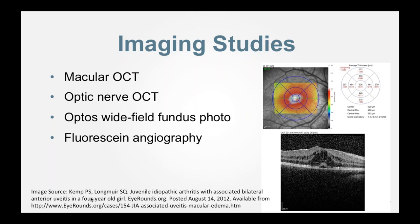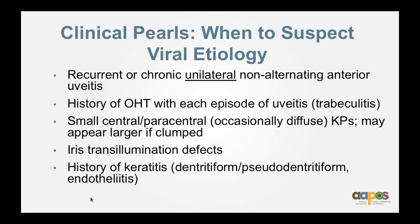Imaging studies include macular OCT, optic nerve OCT, wide-field imaging, and FA. Clinical pearls on when to suspect a viral etiology: if a patient presents with recurrent or chronic unilateral non-alternating uveitis, history of ocular hypertension with each episode of uveitis due to trabeculitis, small central or paracentral — occasionally diffuse — KP that appear larger if clumped. A key finding: if the KP extend beyond the mid-cornea, that should at least put viral in your differential diagnosis.